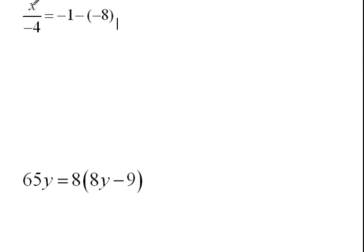In this example we have x over negative 4 equals negative 1 minus a negative 8. So here again I see that double negative first. Let's correct that and rewrite it as the positive before we go any further. Now do you see that we have like terms on the right hand side? The negative 1 and the positive 8 can be combined to give us a 7.